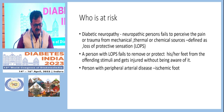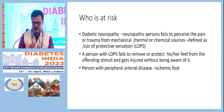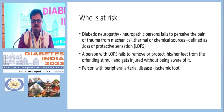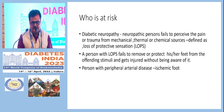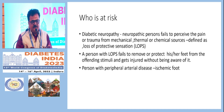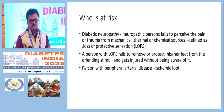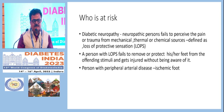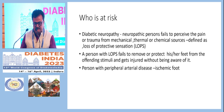Another very high-risk group for developing foot ulcers are people with peripheral vascular diseases. Because of ischemia, these people develop dryness of skin; ulcers are very slow to heal, they get infected, and the patient will ultimately land up in amputation. Some people may have both peripheral arterial disease and neuropathy — what is known as neuro-ischemic foot — which is again a very high-risk foot in patients with diabetes.